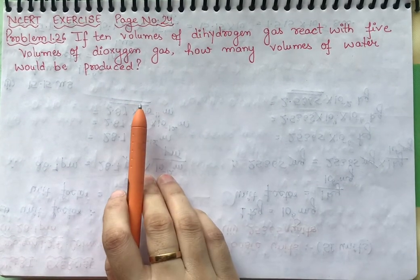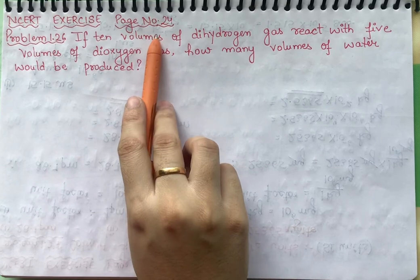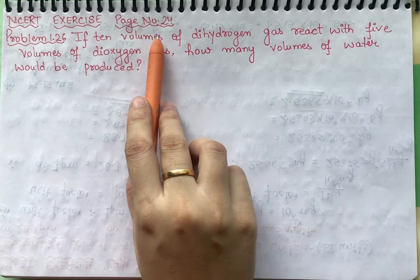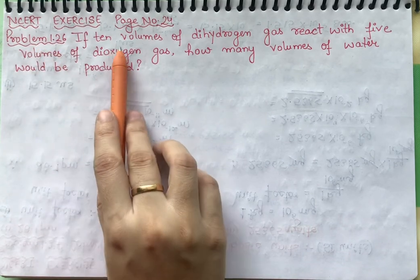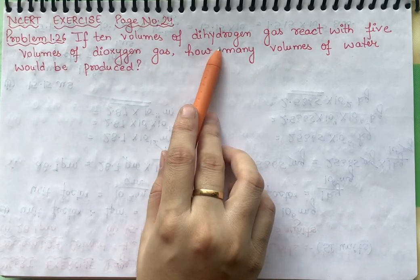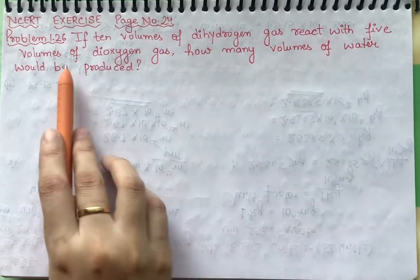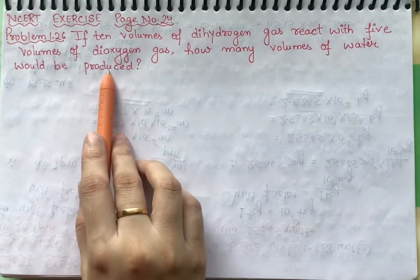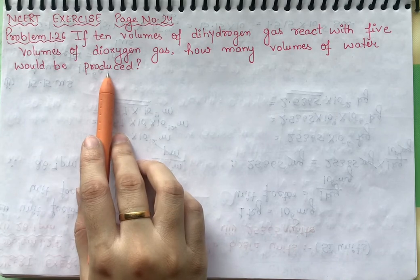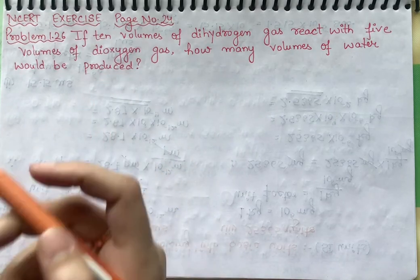Students, here we have NCERT exercise page number 24 of some basic concepts of chemistry, problem number 1.26. If 10 volumes of dihydrogen gas react with 5 volumes of dioxygen gas, how many volumes of water would be produced? We're saying that we have a reaction, a simple reaction.